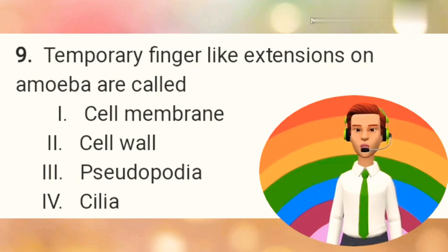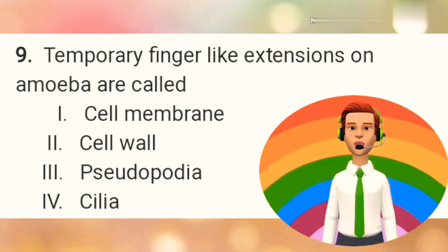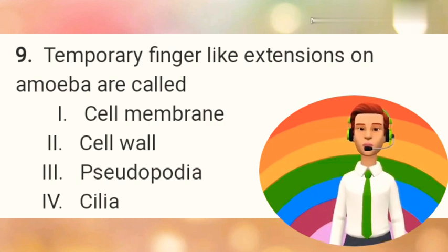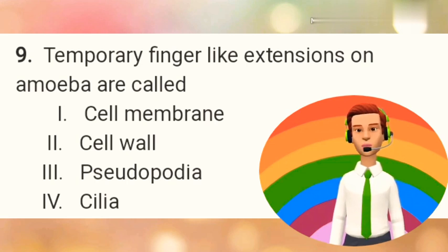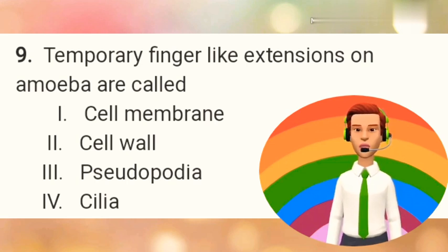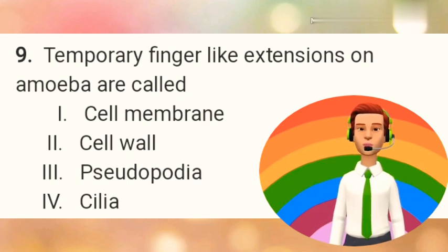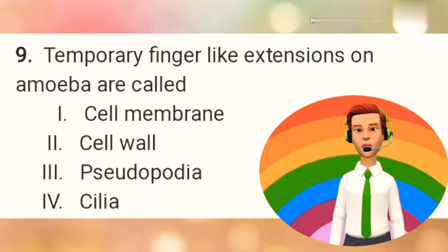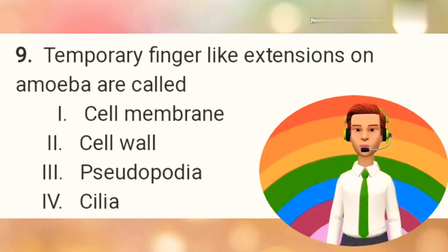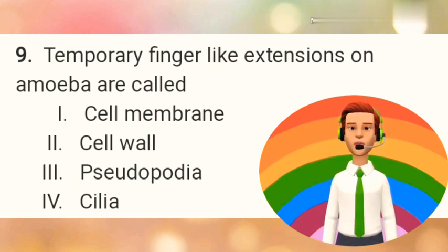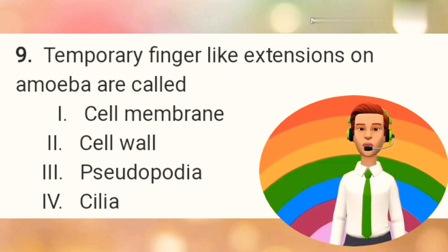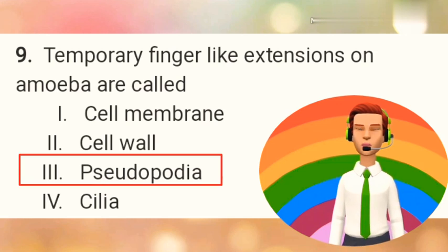Question number 9: Temporary finger-like extensions on amoeba are called? Option 1: Cell membrane. Option 2: Cell wall. Option 3: Pseudopodia. Option 4: Cilia. The right answer is Option 3 — Pseudopodia.